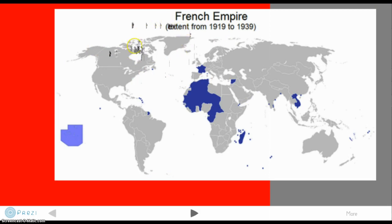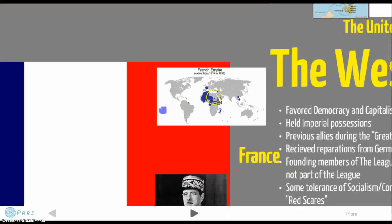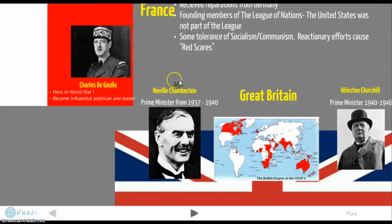Here's France, and here are all their colonial possessions, including Vietnam and Laos, Madagascar, large swaths of Western Africa, and French Guiana in South America. The French had very extensive imperial holdings throughout Africa. However, they're nowhere near as bad as the worst offenders.